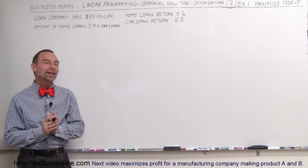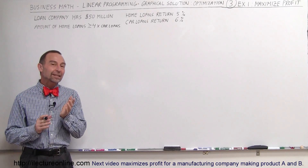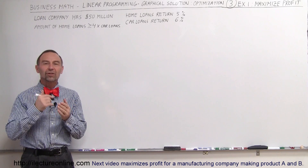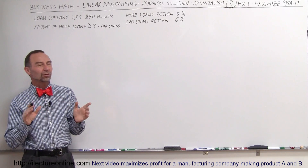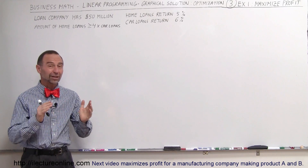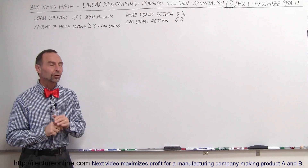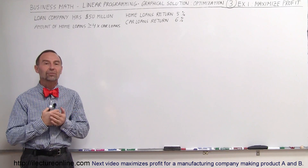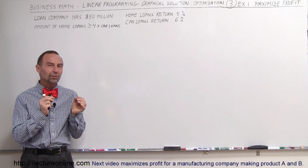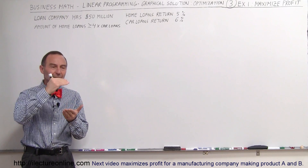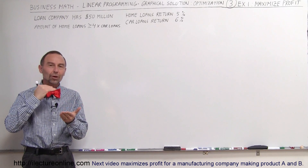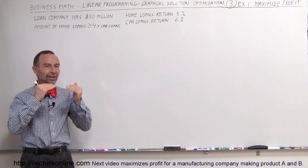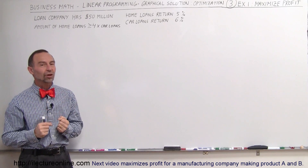Welcome to iLecture Online. Now that we've seen the basic approach on how to find the maximization or minimization of a two-dimensional problem — two-dimensional meaning only with two variables, which we can do graphically — we're now going to see some very practical examples of this technique. The way you solve the problems is following a very predetermined number of steps. There's about nine of them, and if you follow them, it's actually not a bad problem to solve.